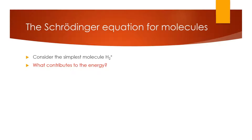Our example in this first section is going to be the simplest molecule we can consider: H2+. This is two nuclei and one electron — two protons and one electron. We'll ask the same question as before: how can we describe the energy of this molecule? This is akin to describing the Schrödinger equation.